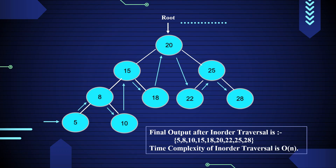After the completion of in-order traversal, the final output is 5, 8, 10, 15, 18, 20, 22, 25, 28. The time complexity of in-order traversal is O(n), where n is the size of the binary tree.